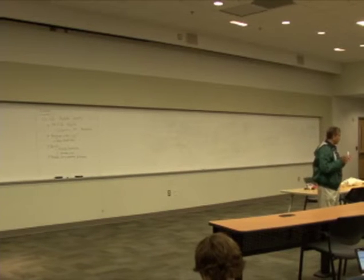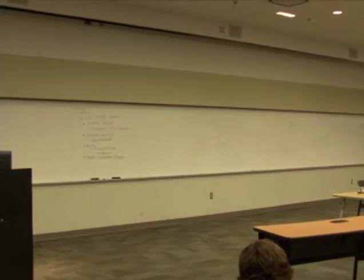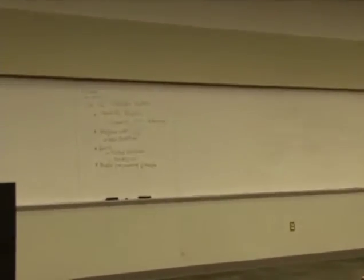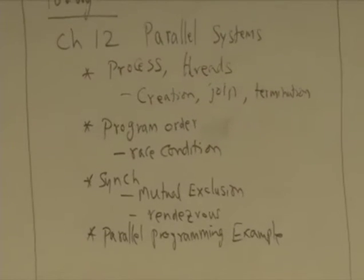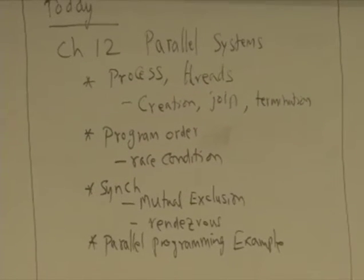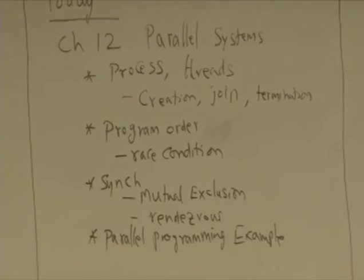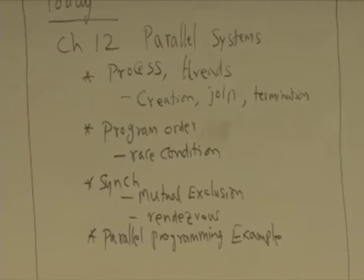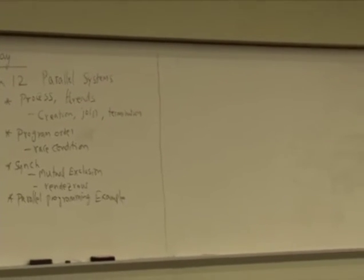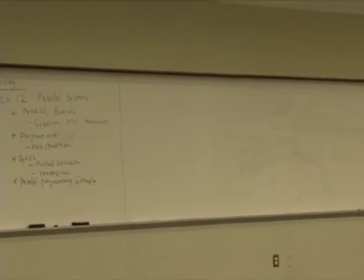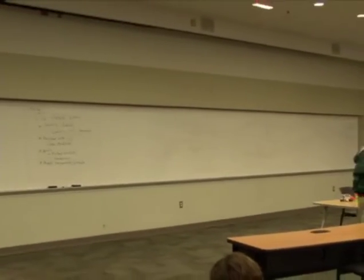What we have seen in the last couple of weeks is the memory systems — both virtual memory and memory hierarchy in terms of caches. Today I'm going to start on parallel systems, which is chapter 12. We're slightly changing the order of coverage in the book. We covered up to chapter 9, which is memory systems, and we're skipping 10 and 11, which is on IO.